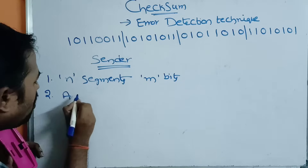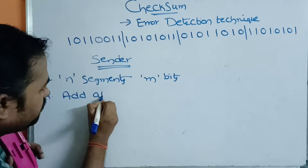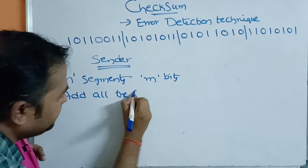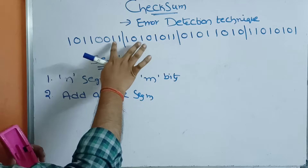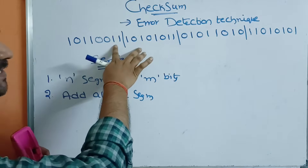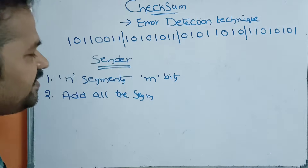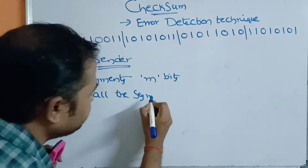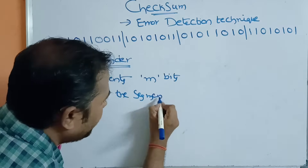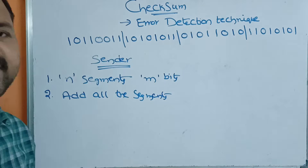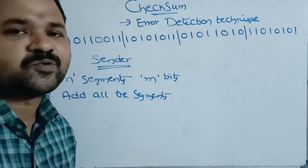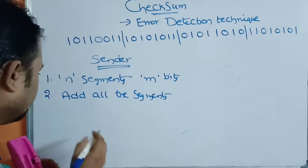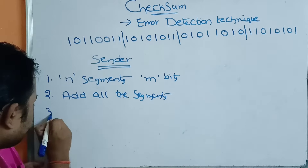The second step is to add all the segments. We add them one by one. First we add the first two segments and get a sum, then add that sum to the next segment, and so on, performing the operation on all 4 segments.